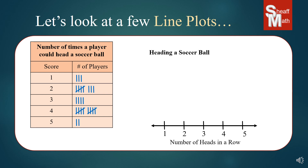Here's how tally works: we use a line to mark one person, another line for the second player, the third, the fourth, and then on the fifth player we cross the line through the four, making it a five. Then six, seven, eight, nine, and another five makes ten. We do that because if there are lots in a particular group, it's easier to count fives and then add the remainder on the end.